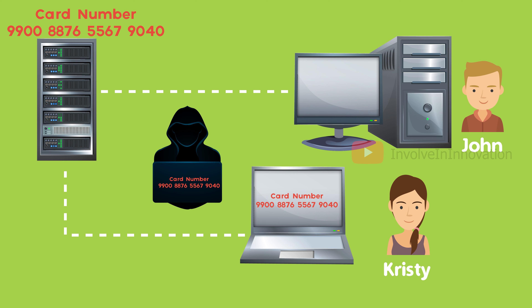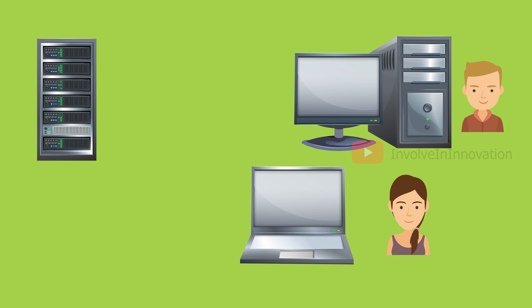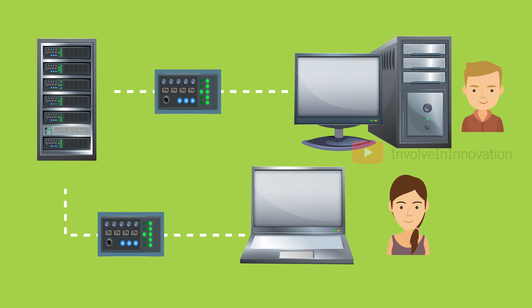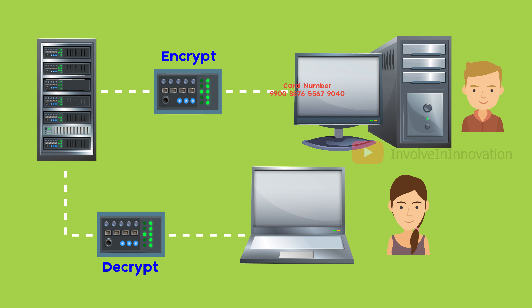Now we will see the same data transfer with cryptography. Here we are using a cryptographic algorithm to encrypt and decrypt the credit card information. John sends the credit card details to Christy. The credit card information John enters will get encrypted before reaching the server — encryption being the process of converting plain text to cipher text.